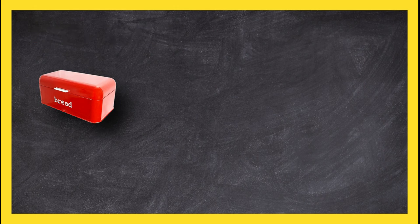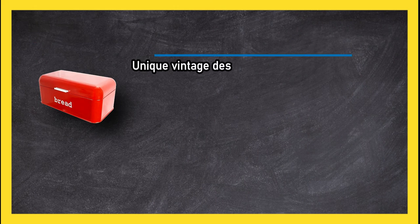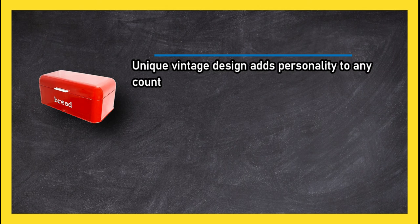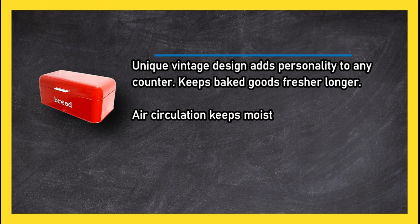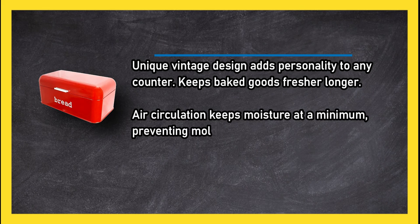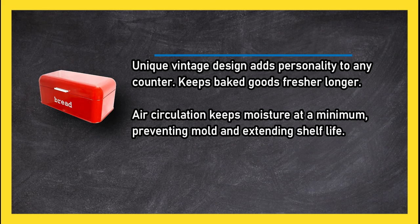At number 3, Scoville bread box. Unique vintage design adds personality to any counter. Keeps baked goods fresher longer. Air circulation keeps moisture at a minimum, preventing mold and extending shelf life.